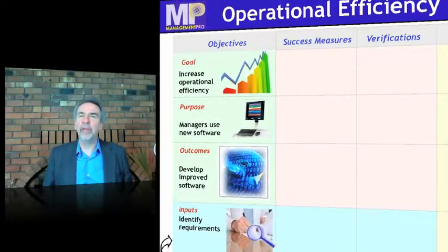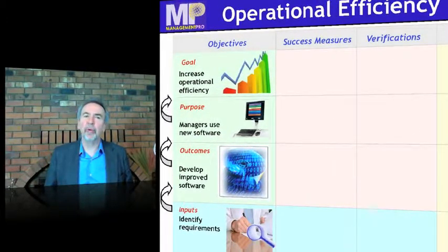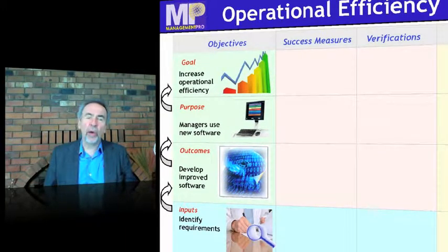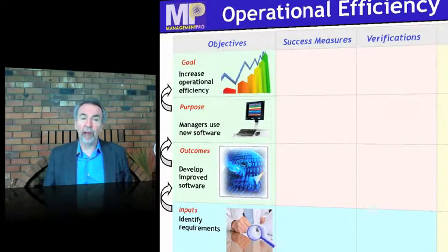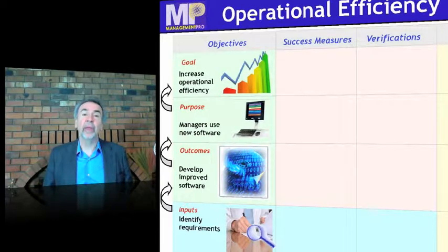So the logic is: if inputs, then outcomes. If outcomes, then purpose. If purpose, then goal. Now the other questions built into the logical framework describe what success looks like at each of these levels in advance, along with how we'll verify it. It also identifies some of the risks in getting to those objectives.